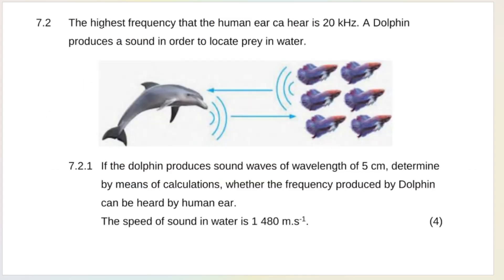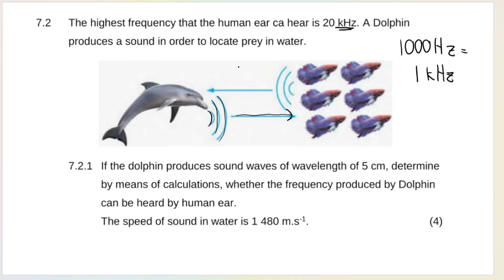Question 7.2: the highest frequency that a human ear can hear is 20 kilohertz. Remember that 1,000 hertz equals 1 kilohertz. A dolphin produces sound to locate prey in water - longitudinal waves are mechanical waves, they need a medium to travel through. The dolphin produces sound, it travels through the water, hits the prey, and echoes back to the dolphin.